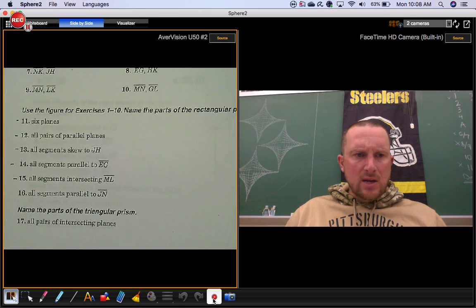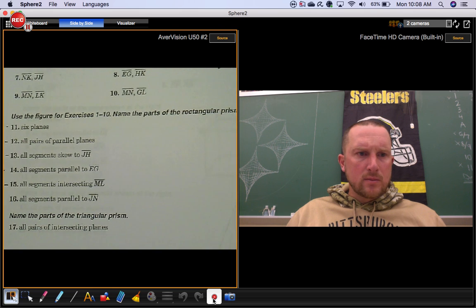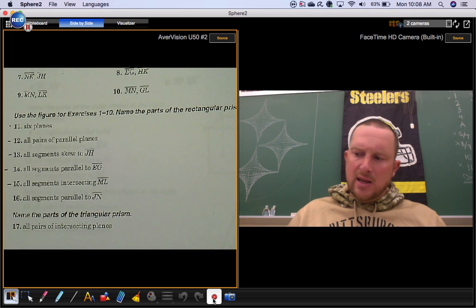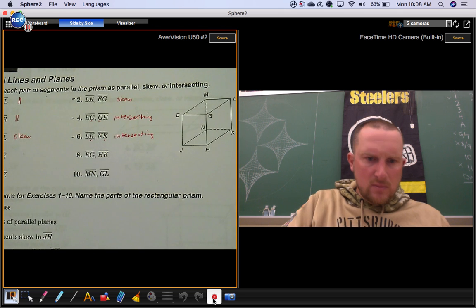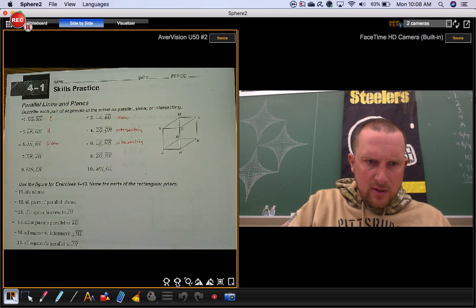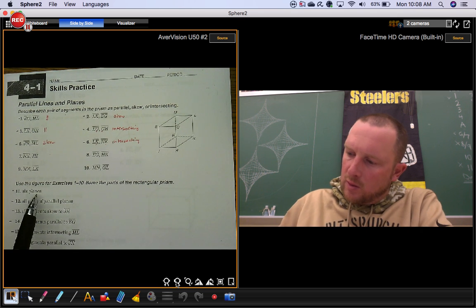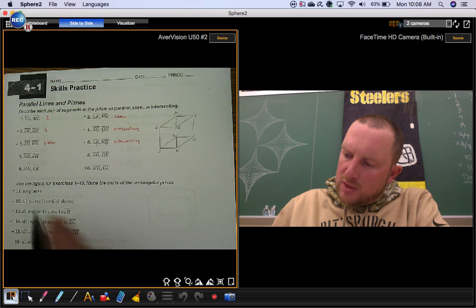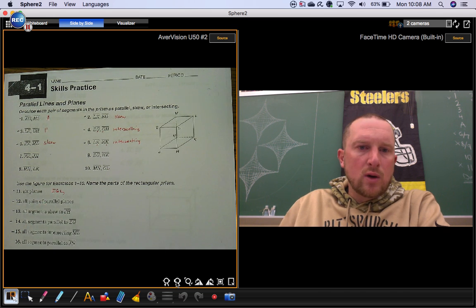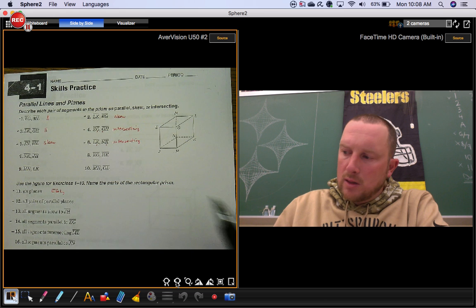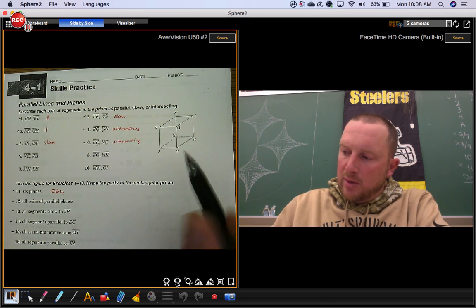Now, using that same diagram, we're going to name the parts of that prism. So number 11 says to name all six planes. I'm going to zoom out just a bit so I can kind of catch the picture and the question. So we're going to name the ceiling first. Just pick three letters from it. EGL works. That's how you name the ceiling. Now, I'm going to name the floor next. I'll name it plane NJH.